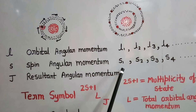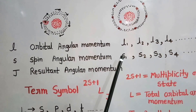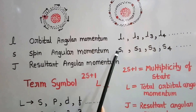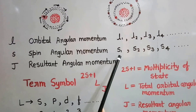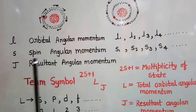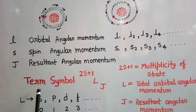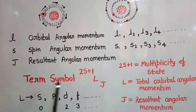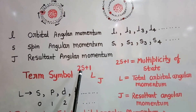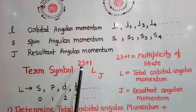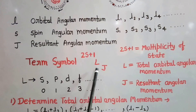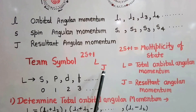In order to understand the energy state of the atom, we consider the resultant angular momentum. This means there will be coupling of the orbital angular momentum and the spin angular momentum. This resultant angular momentum is shown by J. The energy state of the atom is shown by a term symbol denoted as 2S+1 L_J, where 2S+1 shows the multiplicity of that state, L shows the total orbital angular momentum, and J shows the resultant angular momentum.